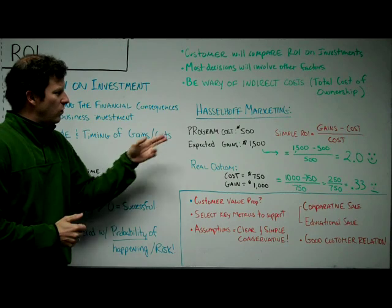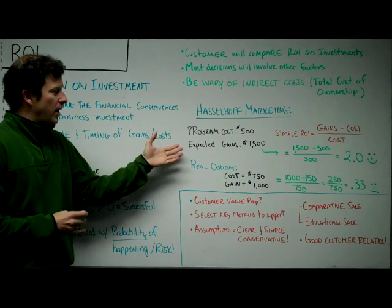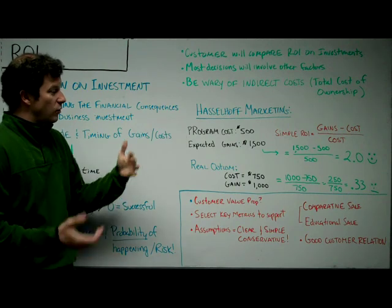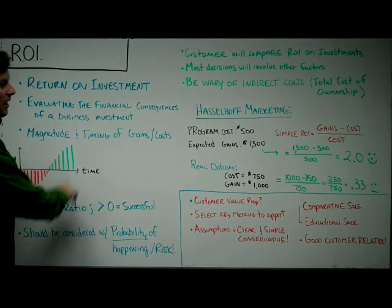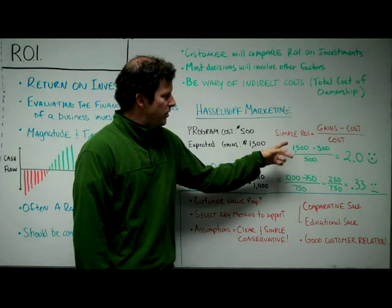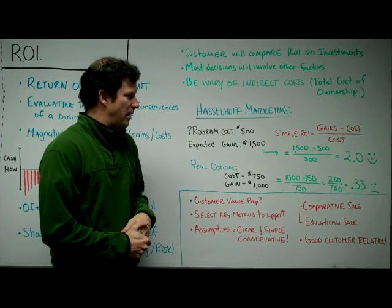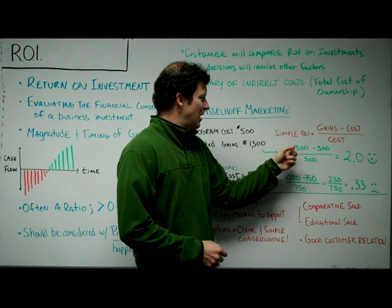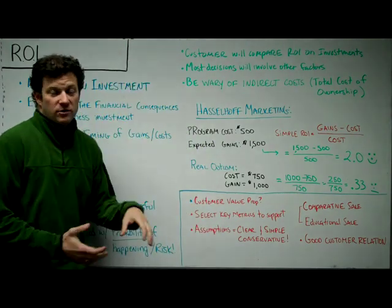Let's look at an example marketing program from Hasselhoff Marketing Company. A company is going to pay them $500 to do search engine optimization on their website, and they want to measure what happens after that optimization. This is a great example of a program that goes right — you spend $500, and then get $1,500 in gains over time in your e-commerce store. The simple ROI equation here is gains minus cost over cost. That helps you form a ratio you can communicate to others. In this case, it's $1,500 minus $500 over $500, giving you $1,000 over $500 — so the simple ROI is about 2 on that program. You're getting 2x your money back.